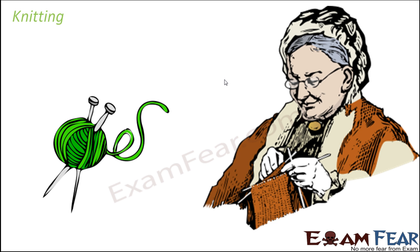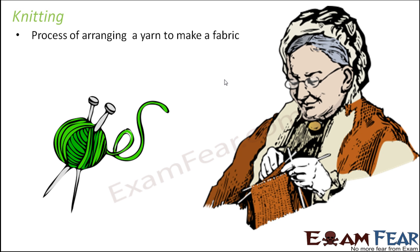In case of weaving, what we did was take two sets of yarns and arrange them interlaced with each other to form a fabric. Now in knitting, instead of taking two sets of yarn, we will take a single set of yarn and arrange it in such a way that it forms a fabric.